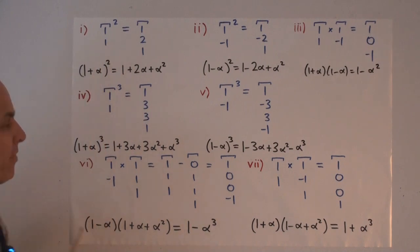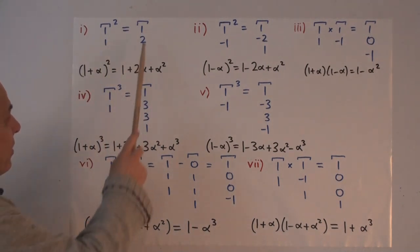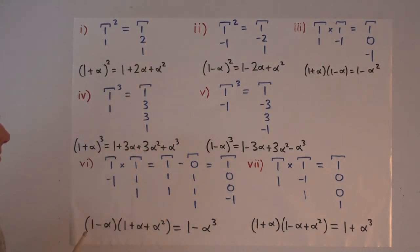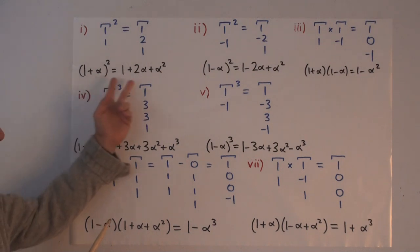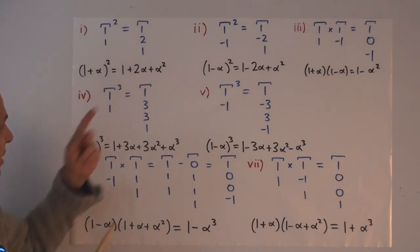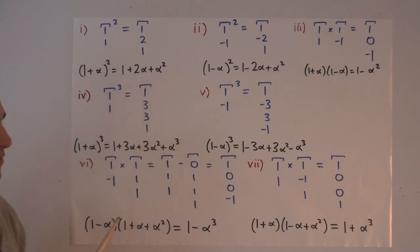If we take the polynumber 1, 1, and we square it, we get 1, 2, 1. And in standard alpha form, that's this expression here, that (1 + α)² = 1 + 2α + α².